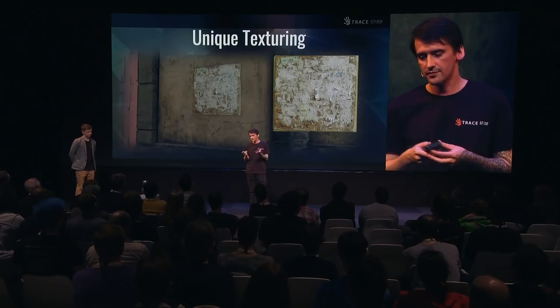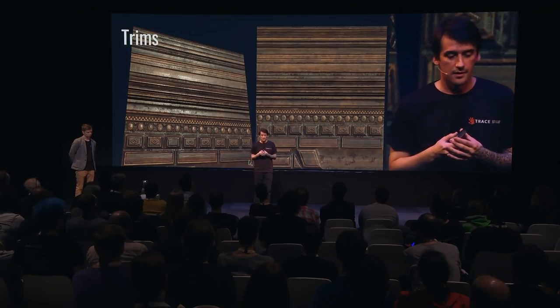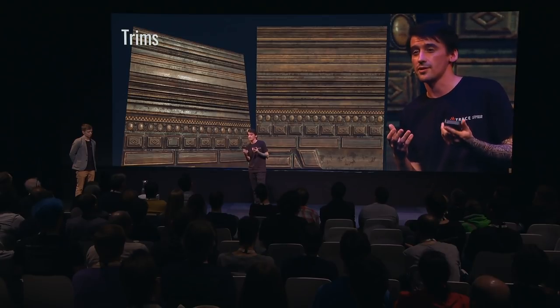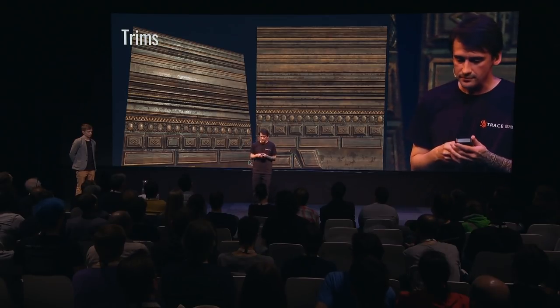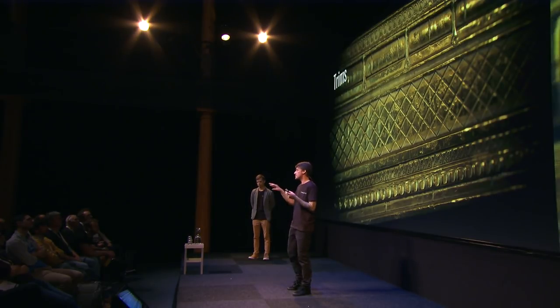If you need to make something medium-sized like a fireplace, you will need to use trims. For medium-sized assets, you need to use trims because you cannot use unique texturing — that would be very expensive. Trims are basically textures that are tileable only in one direction — horizontal or vertical. And you can move these trims around to give your assets a more interesting and exciting look.